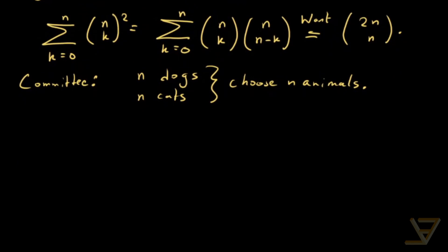So clearly the obvious way of doing it is 2n choose n. But we could also do case work on the number of dogs. The number of dogs can be k equals 0, 1, 2 all the way through to n.